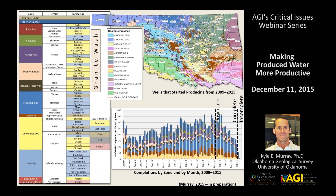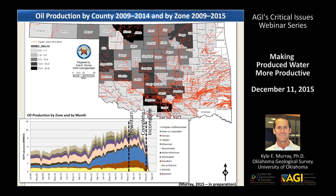One other cluster worth pointing out is the granite wash group, which might include the Des Moines age, Missourian age, and Virgilian age rocks and formations. Those are prominent producers in western Oklahoma. So to set the tone, we have those ten primary zones that I organized the data into.